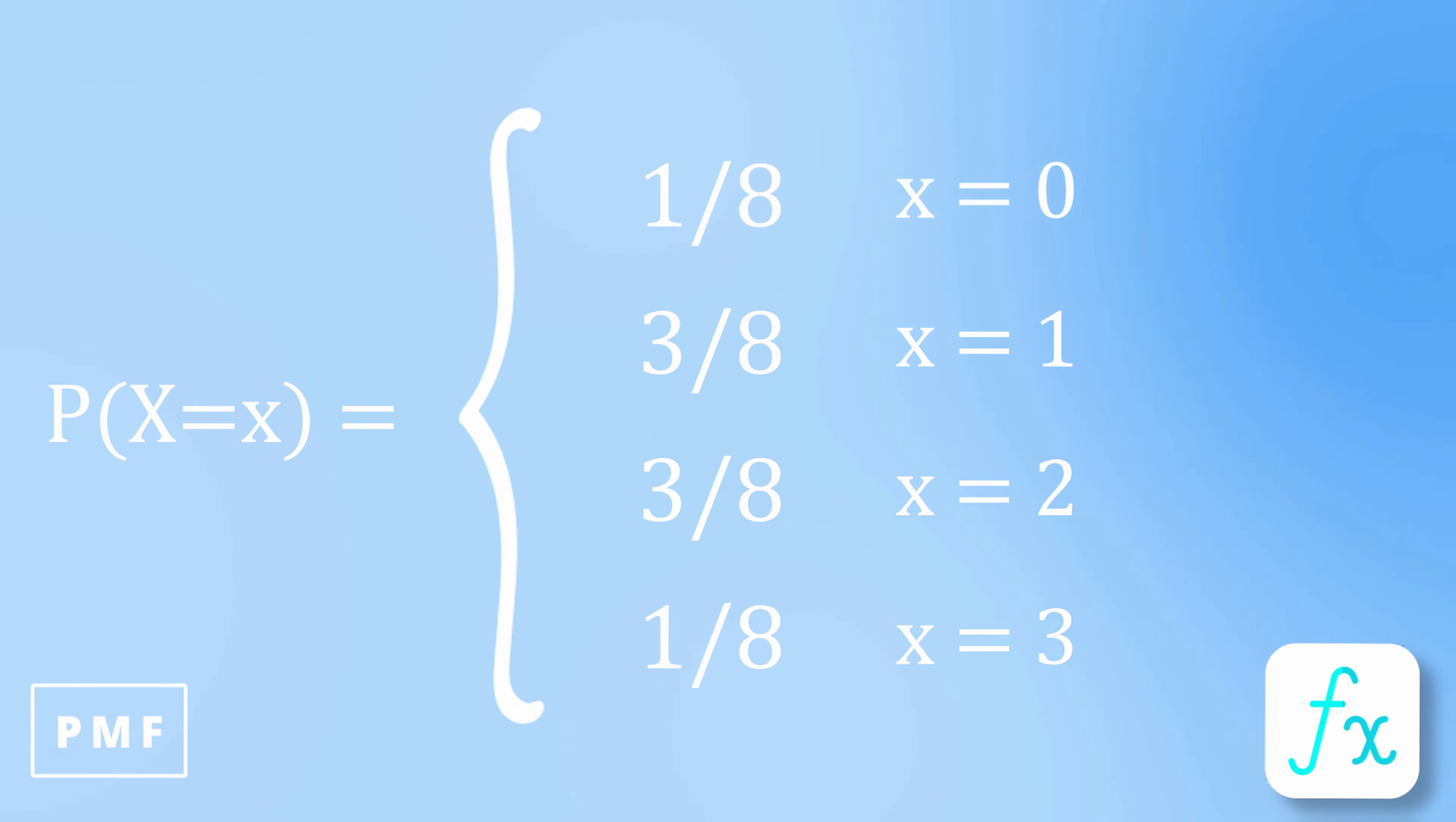This distribution is specifically known as a binomial distribution, which we'll cover later in this series, but for now, let's assume that these numbers are correct. It's customary to use capital letters for random variables. So in this example, capital X represents the number of heads obtained when flipping a coin three times. Lowercase x represents the value of each possible outcome. So lowercase x can take on the values 0, 1, 2, or 3.